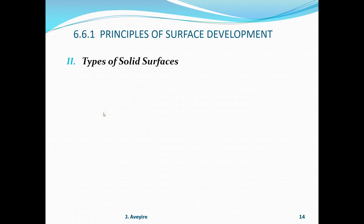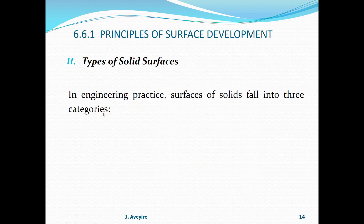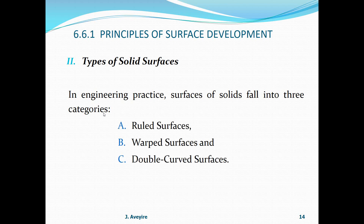Types of solid surfaces. In engineering practice, surfaces of solids fall into three categories: ruled surfaces, warped surfaces, and double curved surfaces.